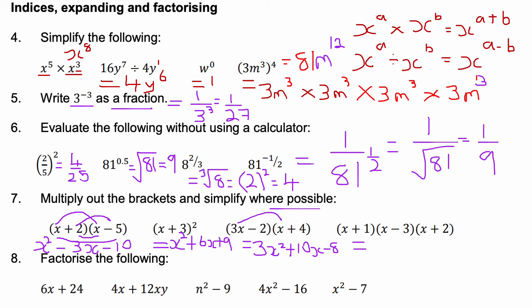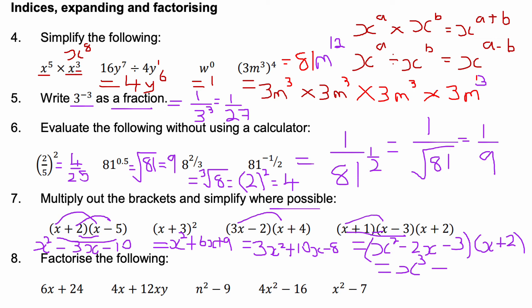Expanding triple brackets — this was higher tier GCSE content. Multiply the first two brackets first. For (x + 1)(x − 3): x times x is x squared; x times negative 3 is minus 3x; plus 1x gives minus 2x; and 1 times negative 3 is negative 3. So that gives x squared minus 2x minus 3, all multiplied by (x + 2). Then: x squared times x is x cubed; x squared times 2 is 2x squared, minus 2x squared cancels; then minus 4x minus 3x gives minus 7x; and minus 3 times 2 is minus 6. Final answer: x cubed minus 7x minus 6.